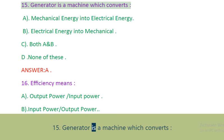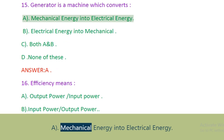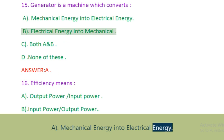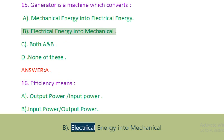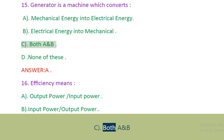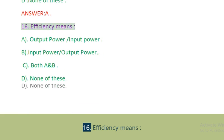Question 15: Generator is a machine which converts. A. Mechanical energy into electrical energy. B. Electrical energy into mechanical energy. C. Both A and B. D. None of these. Answer: A.